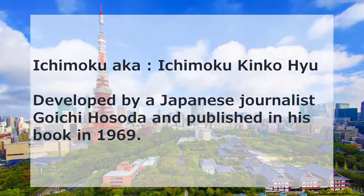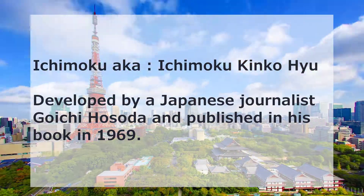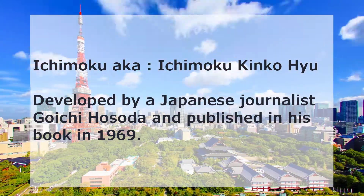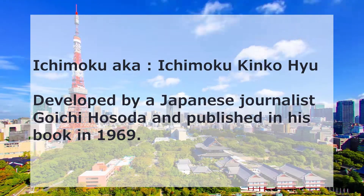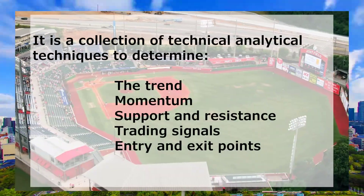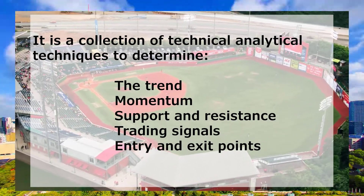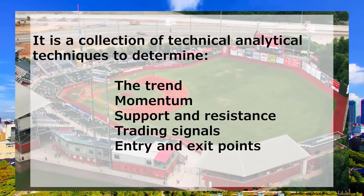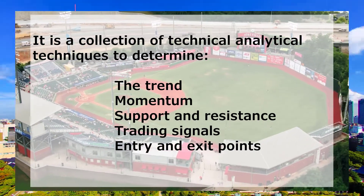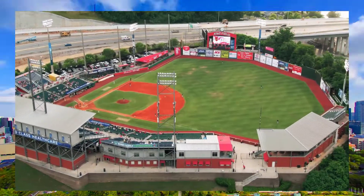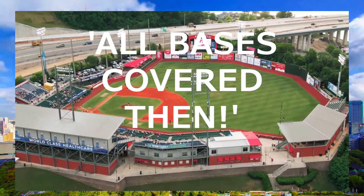Let's dig in a bit deeper. Ichimoku, aka Ichimoku Kinko Hyo, was developed by a Japanese journalist, Goichi Hosoda, and published in his book in 1969. Basically, it's a collection of technical analytical techniques put together to determine trend, momentum, support and resistance, trading signals, and entry and exit points — so pretty much it's covering all the bases that we need in a single system.